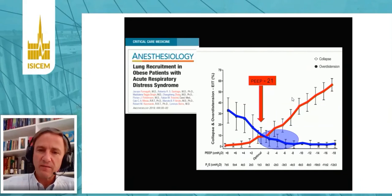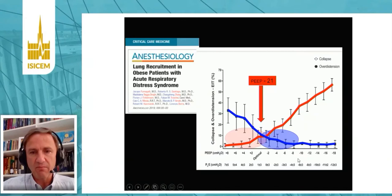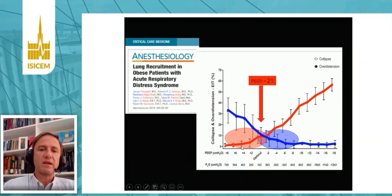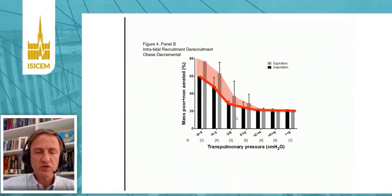Pixels above this level will be in the overdistention part of the curve and will present decreased compliance because of overdistention. Pixels below this level will have decreased compliance because of collapse. We have expanded this concept to patients and animals and consistently demonstrated that whenever you see the crossing point between collapse and hyperdistention, you know that for this particular patient the average trans-pulmonary pressure at the mid part of the lung must be slightly positive, around two or three centimeters of water, while below this level trans-pulmonary pressures start to be negative.